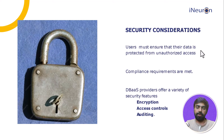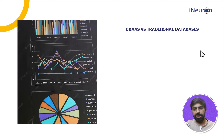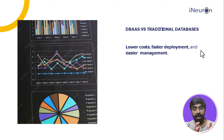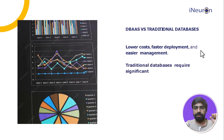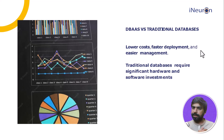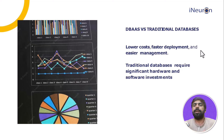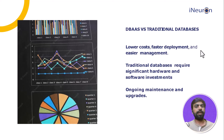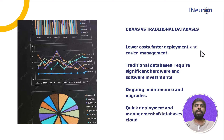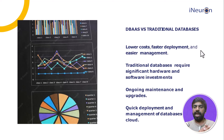Comparing DBaaS to traditional databases, the three major advantages are lower cost, faster deployment, and easier management — apart from scalability, adaptability, and flexibility. Traditional databases require significant hardware and software investments. For example, when a new person joins a department and needs database access, all software downloads and hardware setup must be done for that person too. With DBaaS, ongoing maintenance, upgrades, and quick deployment are all handled by third-party vendors, increasing adaptability and efficiency.